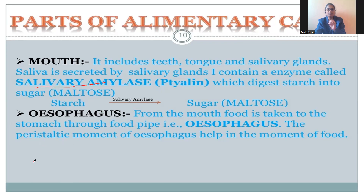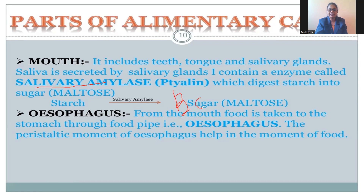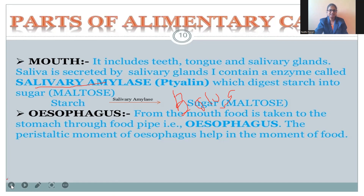After mastication, the food is converted into a ball-like mass. When it enters the food pipe, this mass is called a bolus. So from the mouth the food enters into the esophagus in the form of a bolus. In the esophagus, which is just a long tube, only movement of food takes place from the mouth to the stomach — no digestion takes place and no enzymes are present in the esophagus.